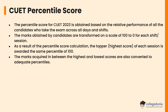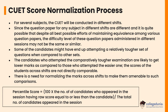As a result of the percentile score calculation, the topper — the highest scorer for each session — is awarded a percentile of 100. The marks acquired between the highest and lowest scores are also converted to adequate percentile values.